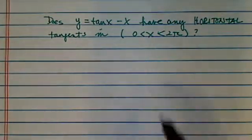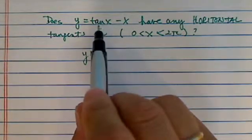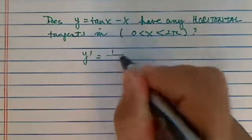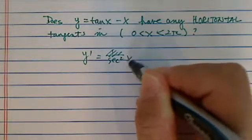To solve this one, we need to find out what the first derivative of the y function is. Let's take a derivative. The derivative of tangent x is secant squared x, and then that's minus 1.